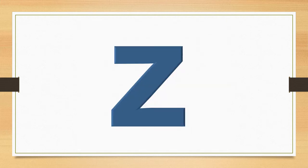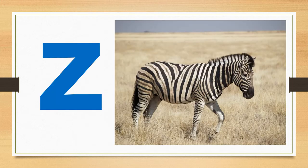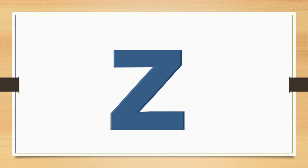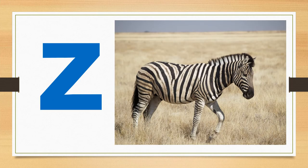This is the lowercase letter Z. The letter Z says Z. Z says Z. The word zebra starts with the sound Z. Z. Zebra. Z. What sound does the letter Z make? The letter Z says Z. Z says Z.